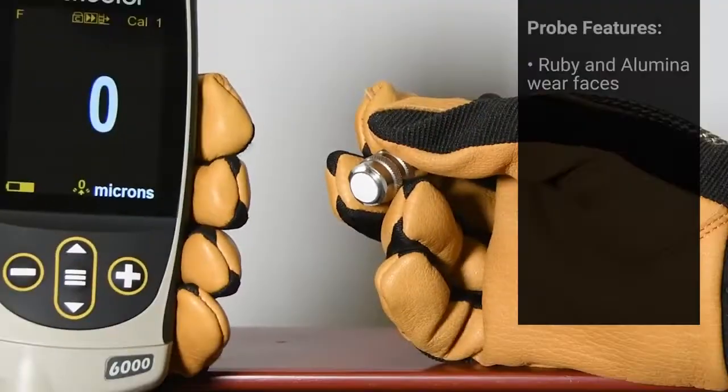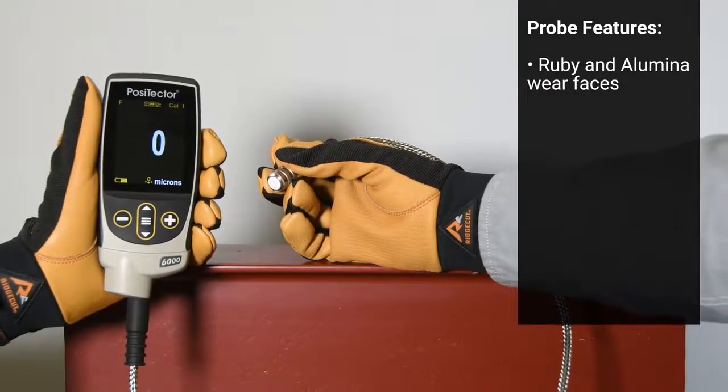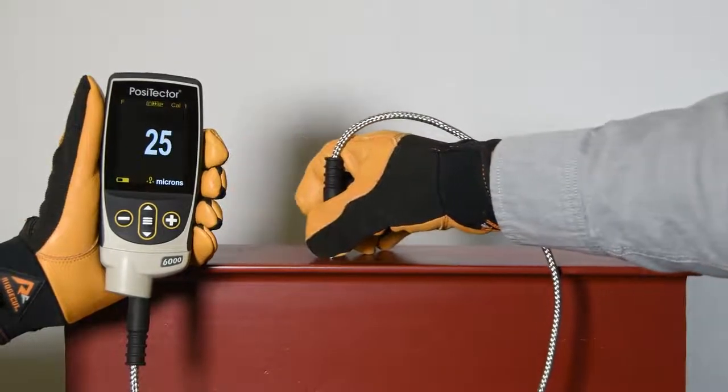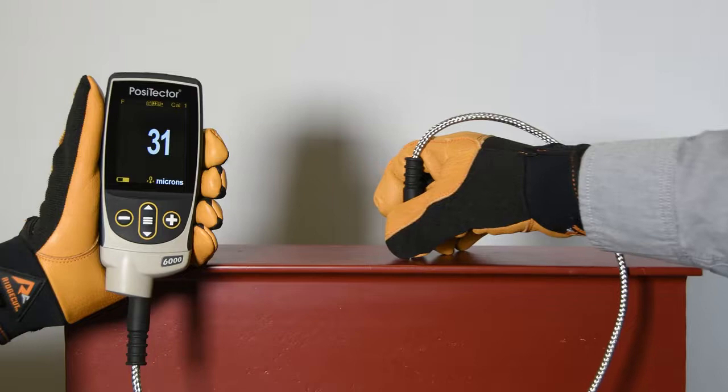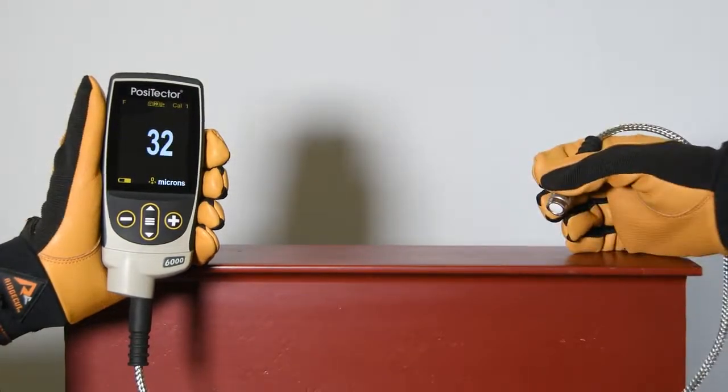Ruby or Illumina probe tips eliminate wear, meaning that the factory calibration is maintained throughout the lifetime of the probe. Whether out of the box or after years of use, the PosiTector 6000 paint thickness gauge will continually provide accurate results throughout the entire measurement range.